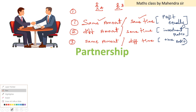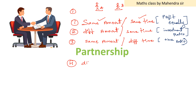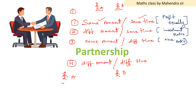Now the fourth and final category — the last combination: different amounts for different time periods. Here A invests 30,000 and B invests 50,000. A invests for 6 months and B for 12 months.